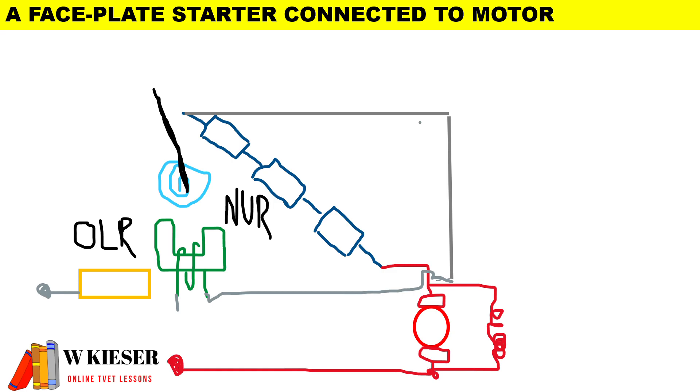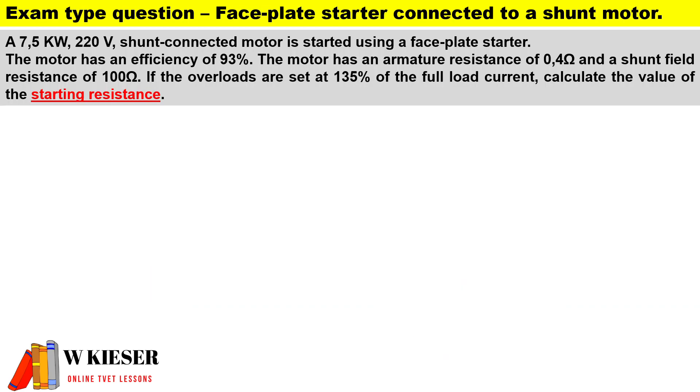When we connect our electric circuit so that we have a shunt motor, you'll see that the field winding is connected in parallel to the armature.